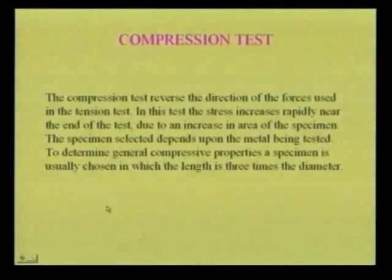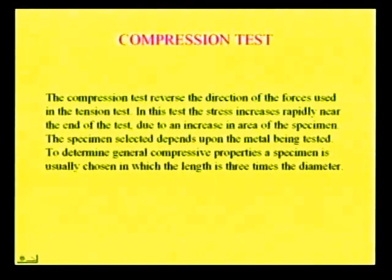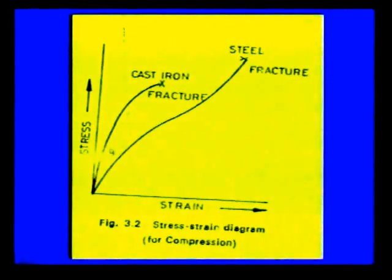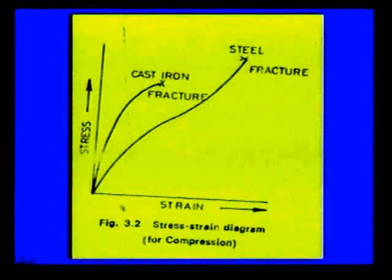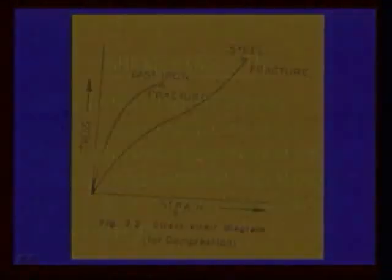In the compression test, the direction of forces used in the tension test is reversed. The stress increases rapidly near the end of the test due to an increase in area of the specimen. The specimen selected depends upon the metal being tested; generally the compression test is developed on materials like wood and brick. There is no yield point and no proportional limit — the material directly comes to the fracture state suddenly. In the case of cast iron and steel, these are the graphs obtained between stress and strain when subjected to compressive load.